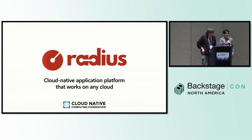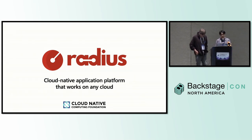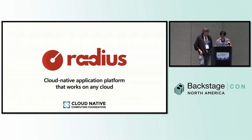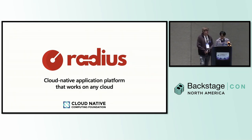Before we jump in, I wanted to talk a little bit about what Radius is. Radius is a cloud-native application platform that works on any cloud. It's a new CNCF project, and we're primarily concerned with the way you define and deploy your application across different platforms. It's an application platform that allows you to define your application one time and then deploy it across private, public cloud, and various other platforms. And one of the problems that Radius helps to solve is the ability to visually interact with the application that you've deployed.